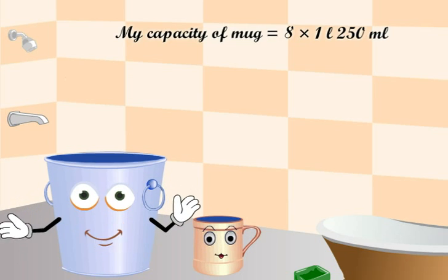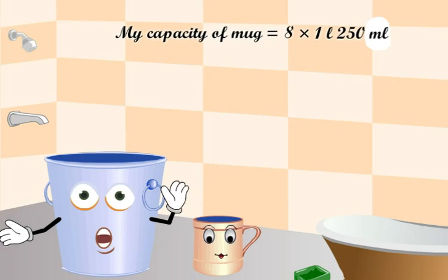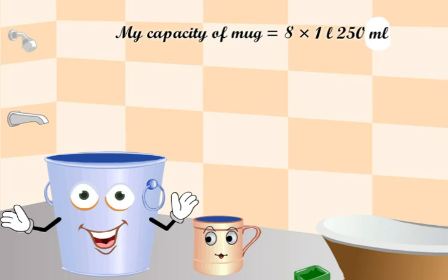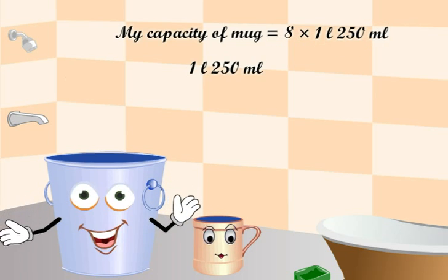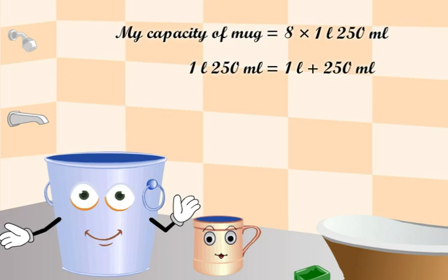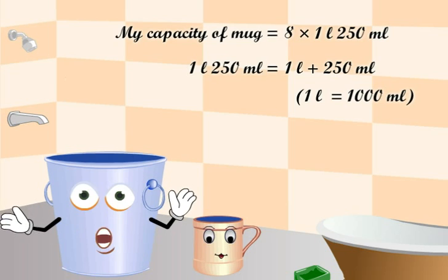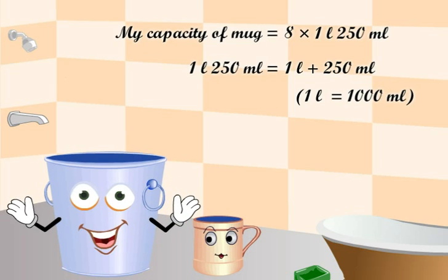Here, the capacity has two different units: liters and milliliters. So let us first convert it into only milliliters. 1 liter 250 milliliters can be written as 1 liter plus 250 milliliters. We know that 1 liter is equal to 1000 milliliters.